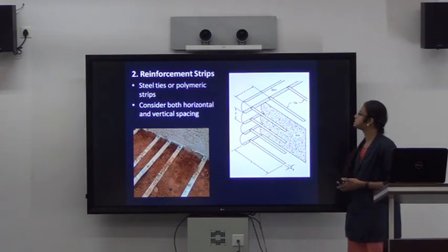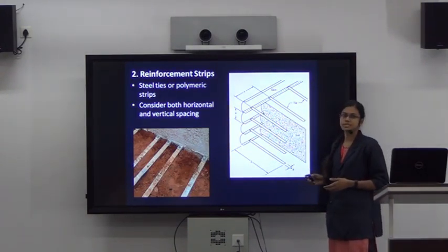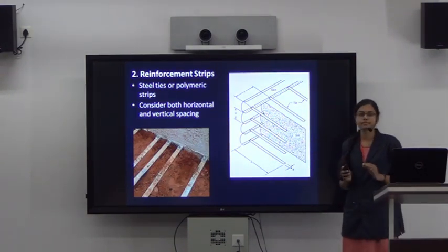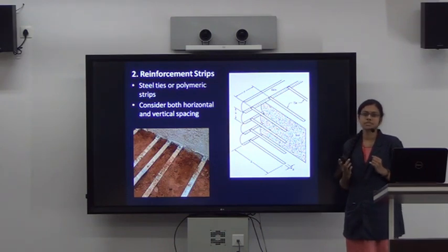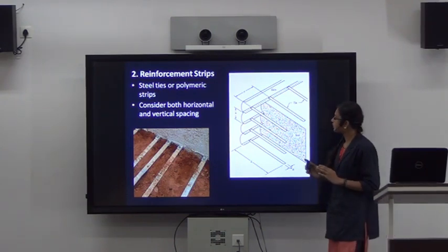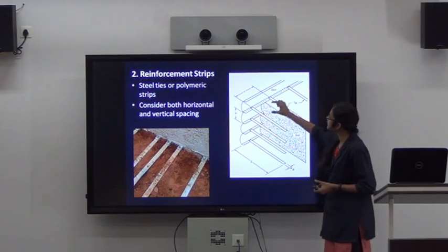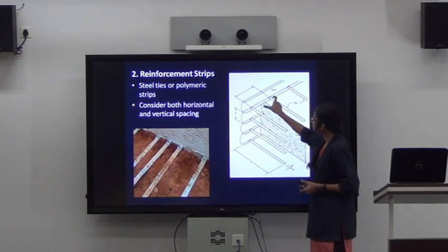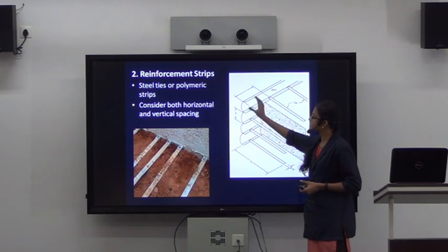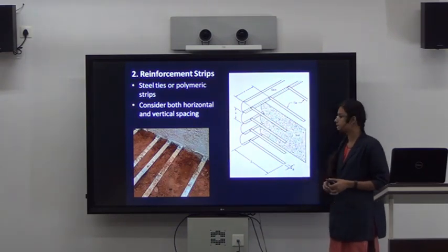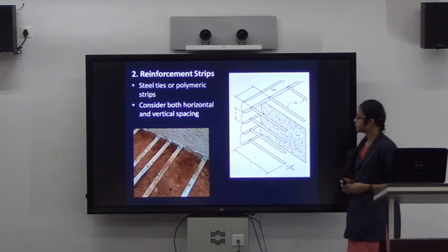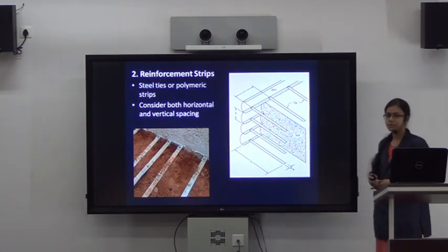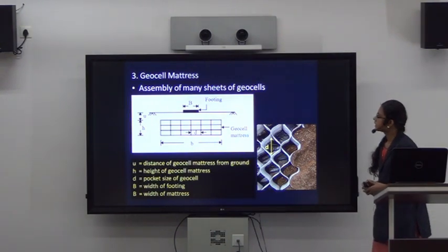The next form of reinforcement is reinforcement strips. These can be either metallic strips or synthetic polymer strips. Here we consider both vertical spacing and horizontal spacing while designing.